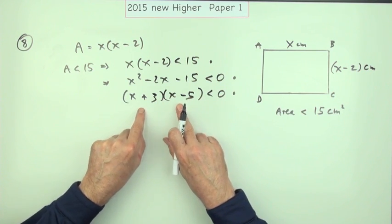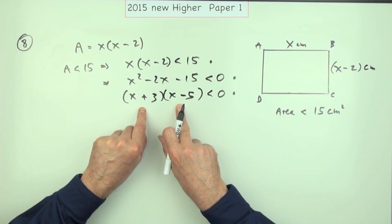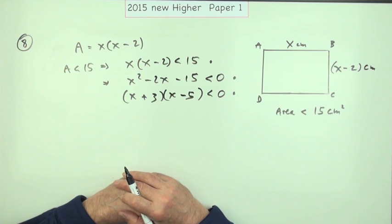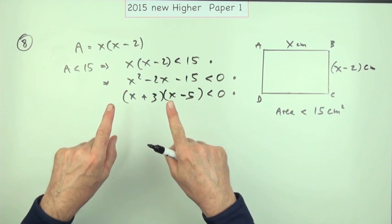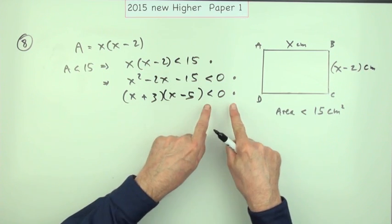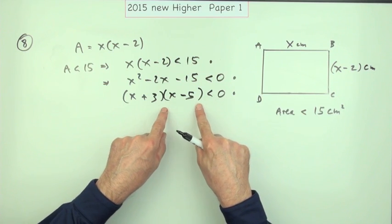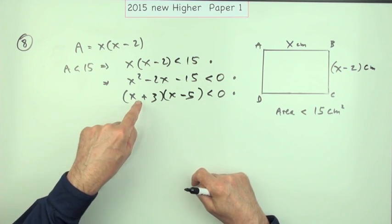And then that's where you stop following the normal procedure for solving an equation. What you don't do now is say, 'Oh, so either this is less than zero or that is less than zero.' If that was less than zero and that was less than zero, the product would be greater than zero.